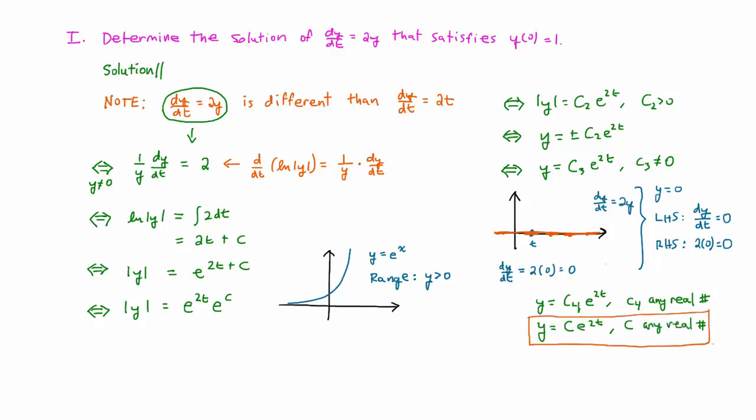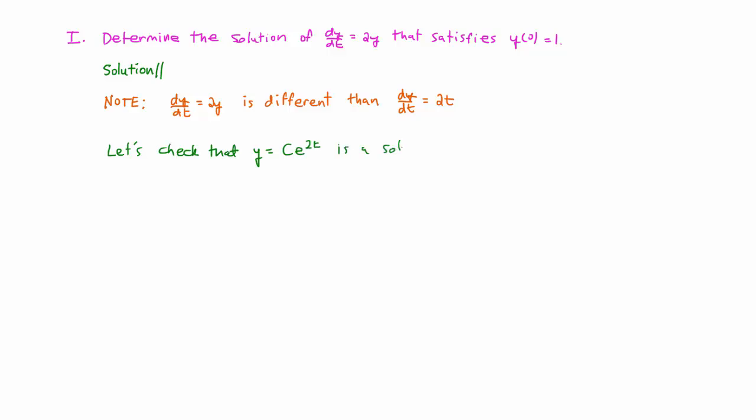Alright, we think we have the solution now, but let's check that y equals c e to the 2t is a solution. To do this, we just substitute our formula for y into the differential equation and check if it makes the equation true.